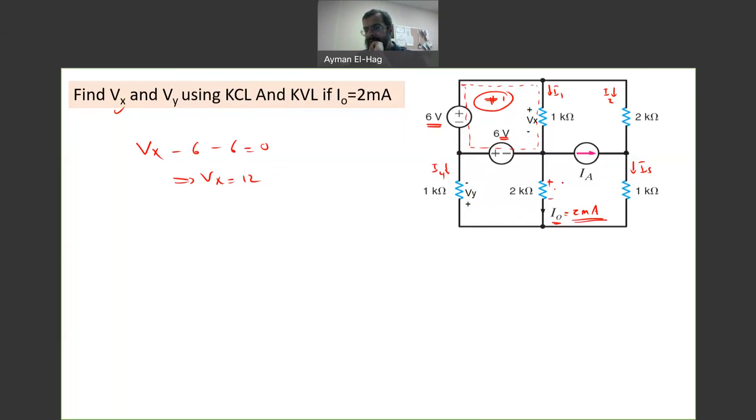So this voltage B is equal to 2 kilo. So 2 times 10 to 3 times the current, 2 milli, 2 times 10 to minus 3. This would cancel. So this is equal to 4 volt. So the voltage here is equal to 4 volt.